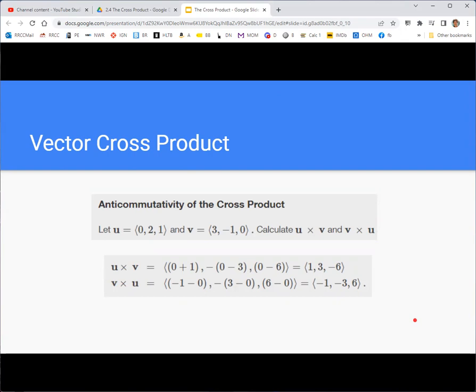It is different only in that it's the same vector pointed in the opposite direction. So switching from u cross v to v cross u, you will get just each component is the opposite number. So one to negative one, three to negative three, negative six to six.